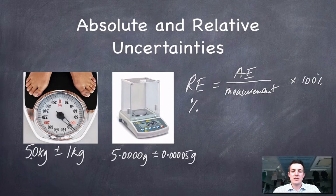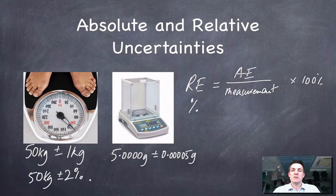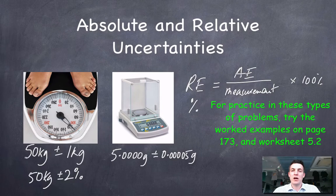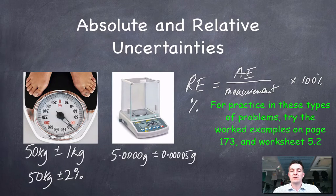What would 1 kilogram be as a percentage of 50? Well, it's 1 over 50 times 100, which is 2%. So the relative error in a 50 kg measurement is plus or minus 2%. If I had measured 100 kilograms, this relative error would only be 1%. Hence the reason we always try to make a big measurement — the absolute error turns into a smaller relative error.